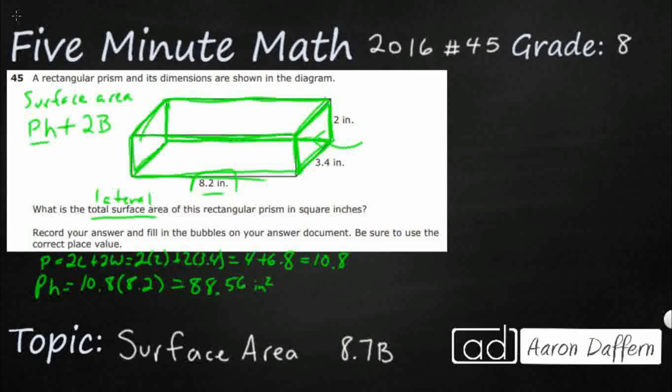Now I need to find the base and just double it. Double the base means two times length times width. My length times width is 2 times 3.4, so it's going to be 2 times 6.8.